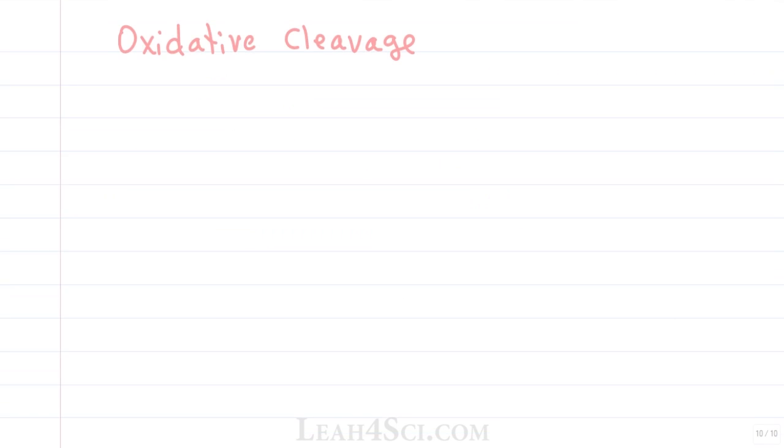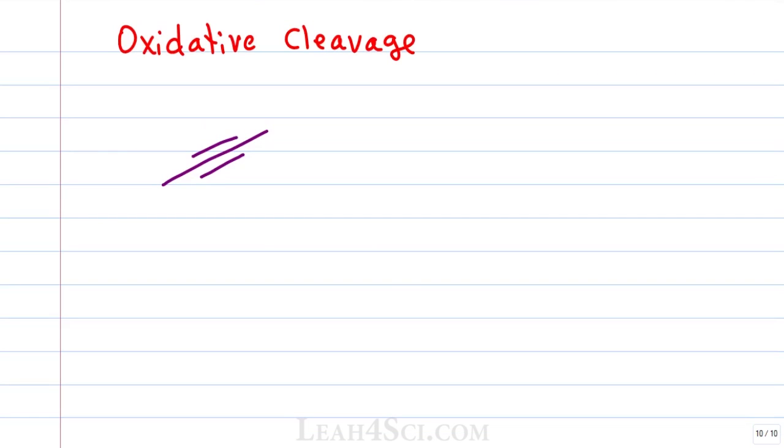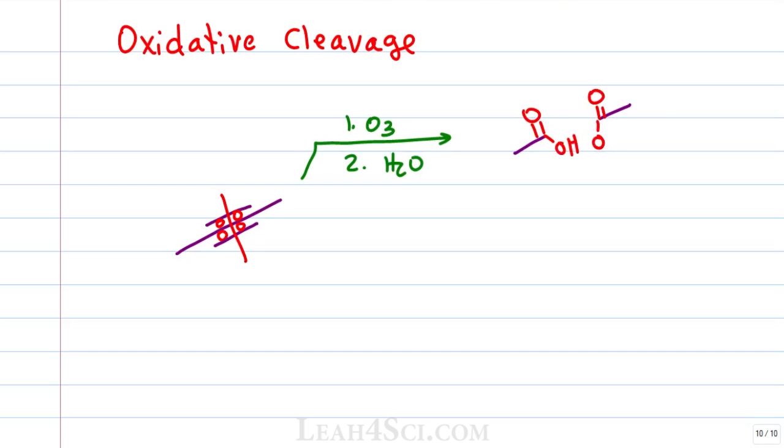Like alkenes, alkynes can undergo oxidative cleavage using the same trick where you slice the molecule between the pi bonds and add an oxygen atom for every pi bond you break. Notice that for an alkyne, we add two oxygens per carbon so we know it's going to be much more oxidized compared to its alkene counterpart. For ozonolysis, we only need water in the final step. So we'll draw the product as the two carbon fragments that we had initially but then make sure to add two oxygen atoms to each fragment for two carboxylic acids.